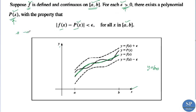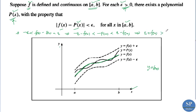This means that −ε < f(x) − p(x) < ε, which implies f(x) − ε < p(x) < f(x) + ε. So we can find a polynomial p(x) which lies inside the band defined by f(x) − ε and f(x) + ε.